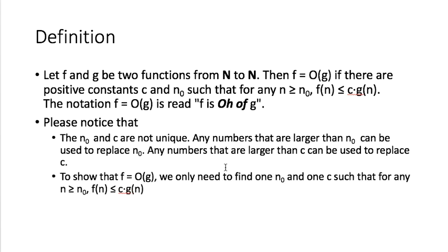So if we want to prove that f is O of g, we only need to find one n₀ and one c such that for any n greater than n₀, we have f(n) less than or equal to c times g(n). I already made a video showing several examples of this.